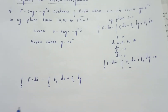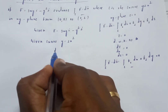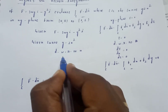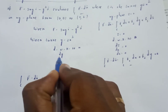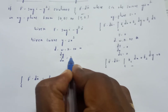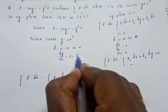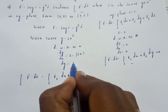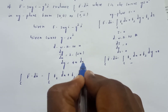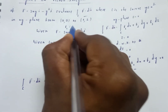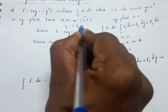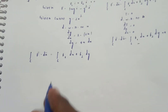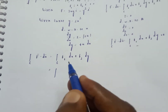Now differentiate y with respect to x. Since y is equal to 2x square, dy by dx is equal to 4x, so dy is equal to 4x dx.